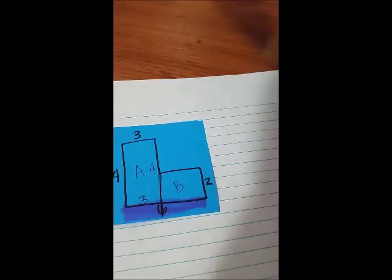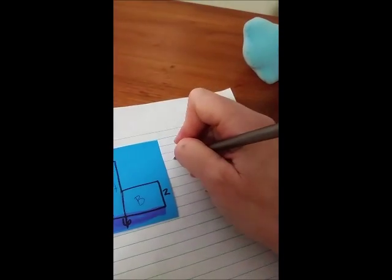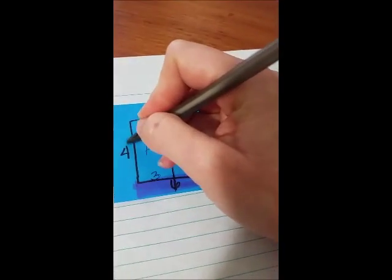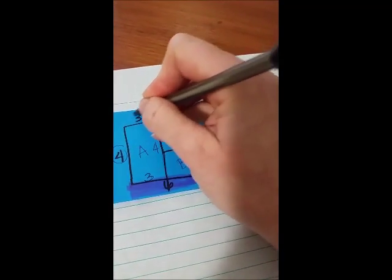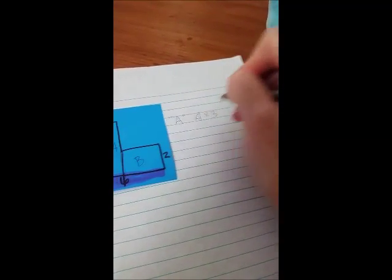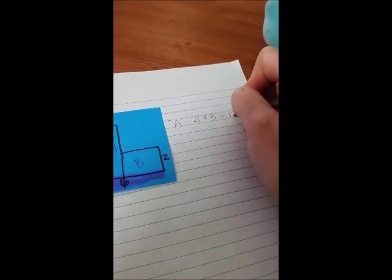Now we're going to use our handy dandy hands, our helpers, to help us focus on Rectangle A. Rectangle A has all the tops, bottoms, and the left and right sides labeled. So we're going to come over here to the side of our scratch paper and find our factors for Rectangle A. Remember, to find the area you multiply the length times the width. So for A, I'm going to say four times three equals 12.